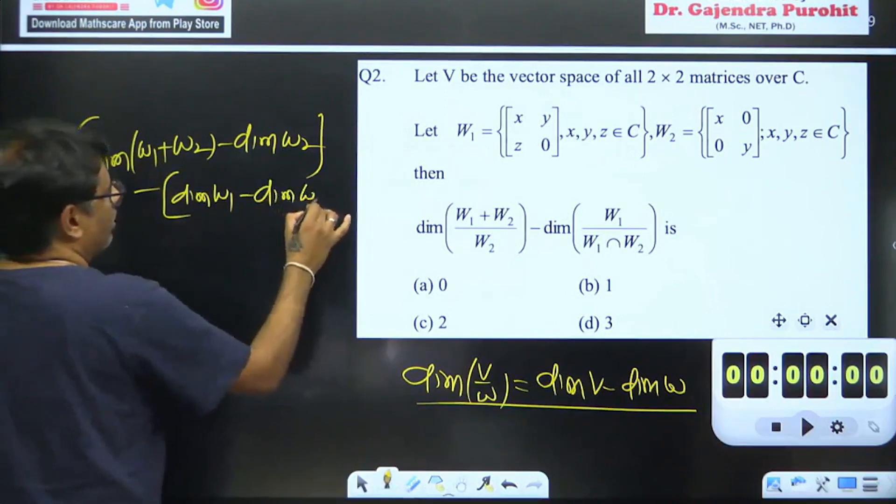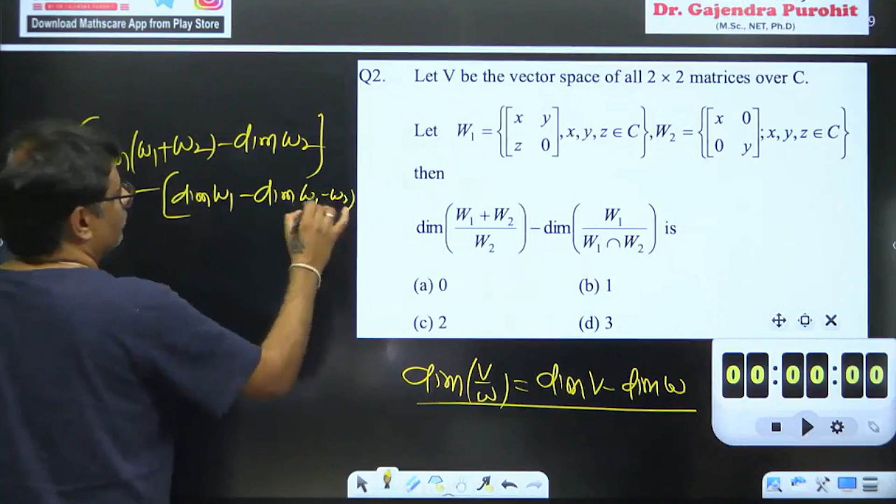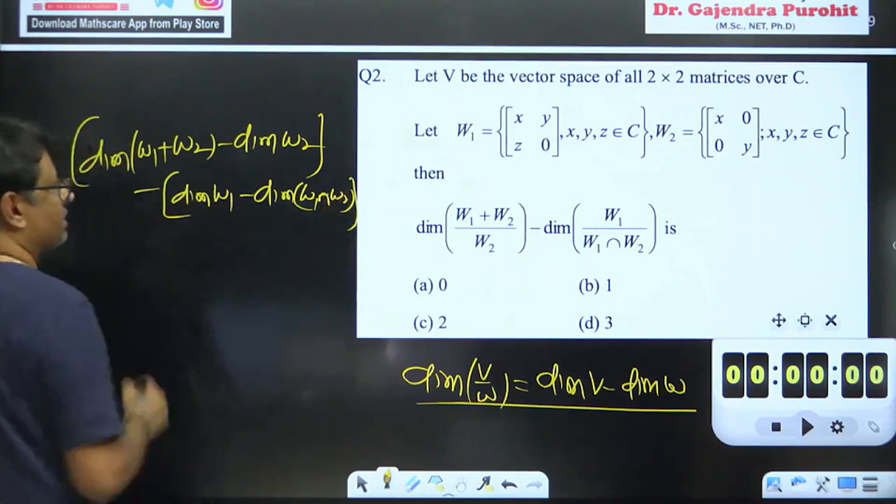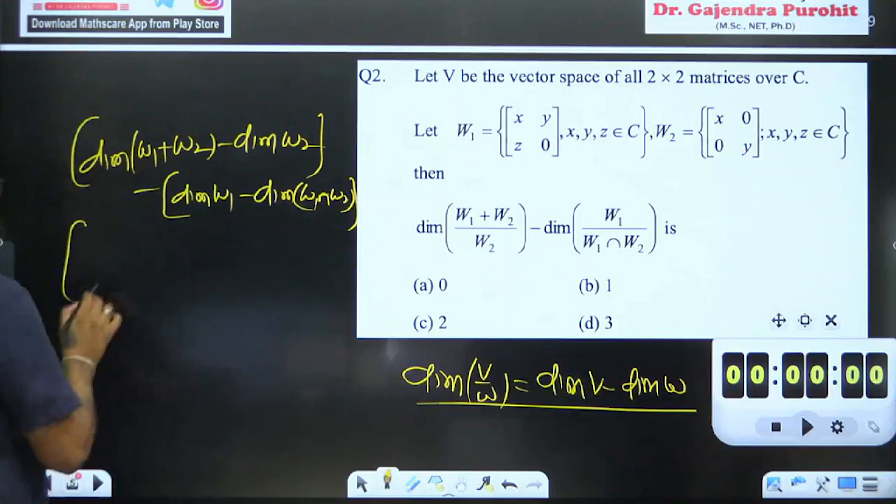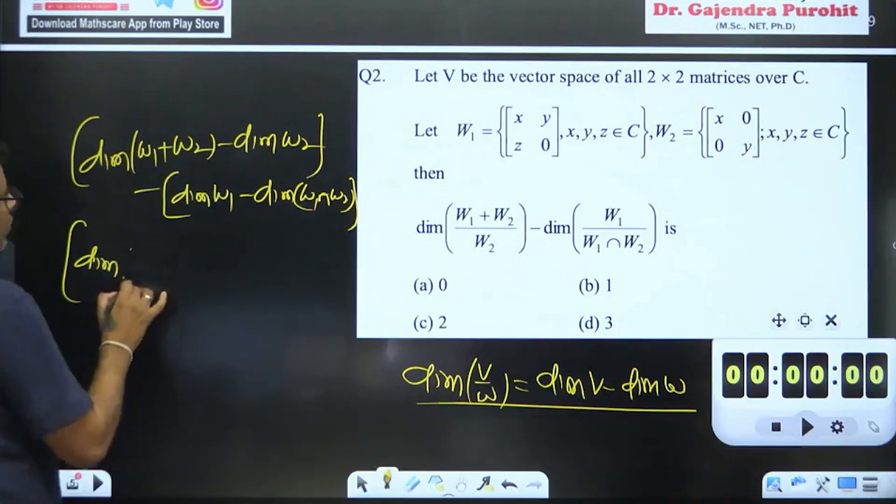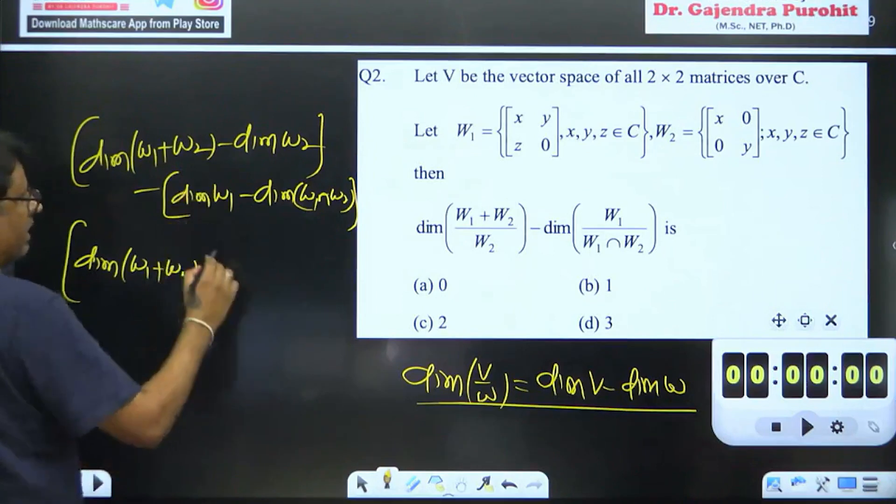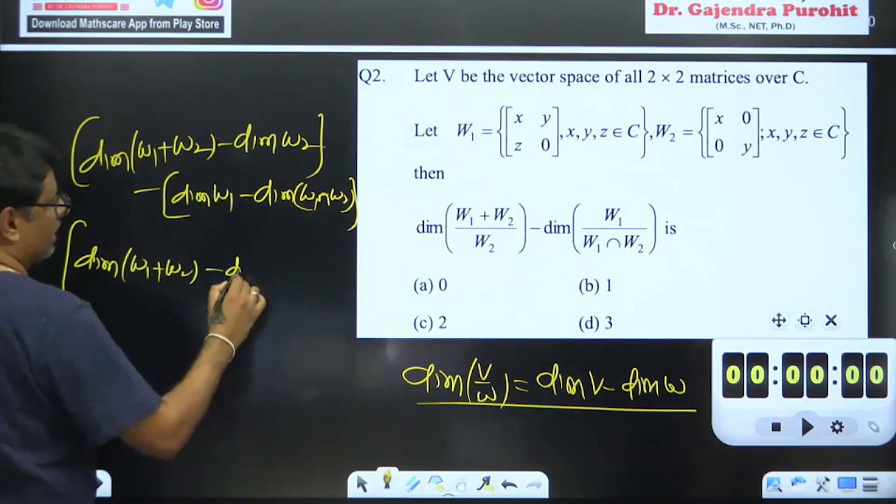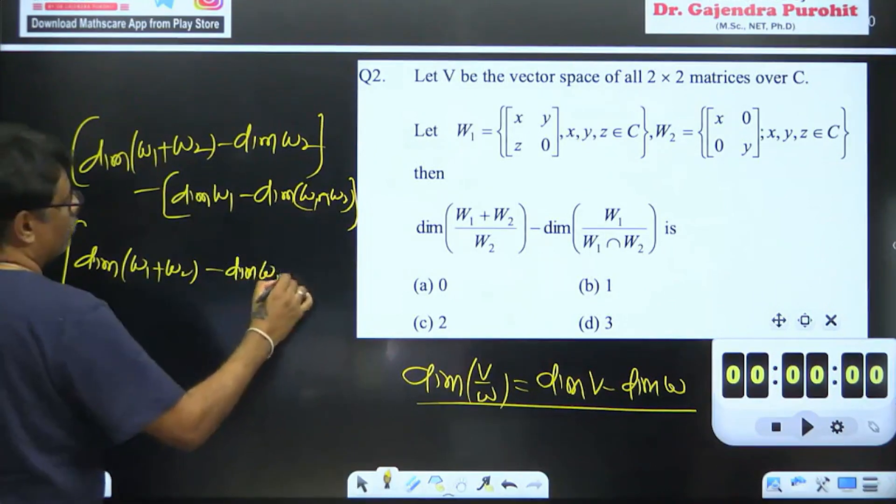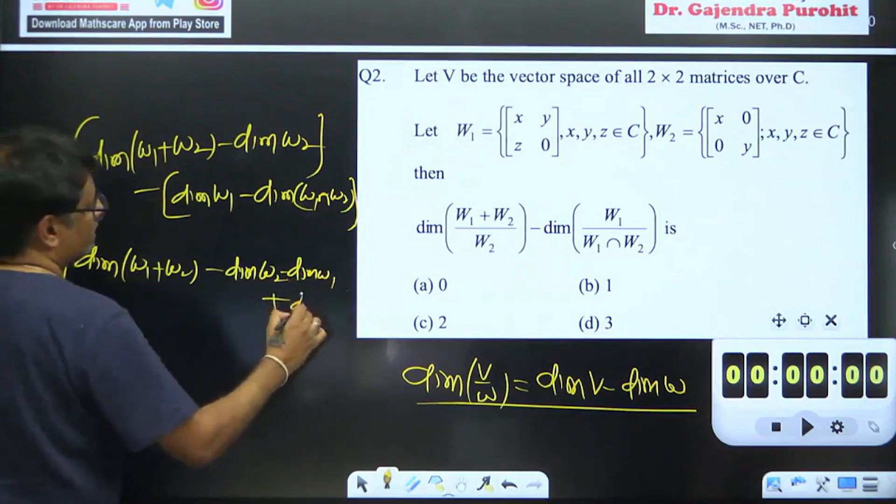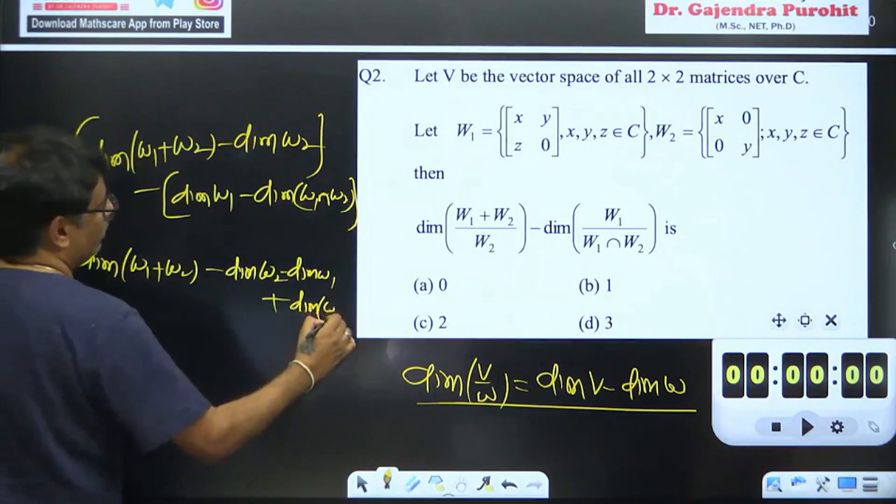Dimension of w1 minus w2. Sorry, the intersection of w2. Now, when we open it, this is a dimension of w1 plus w2 minus. This is a minus. This is a dimension of w2 minus dimension of w1 plus dimension of w1 intersection w2.